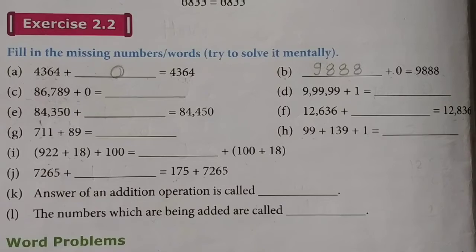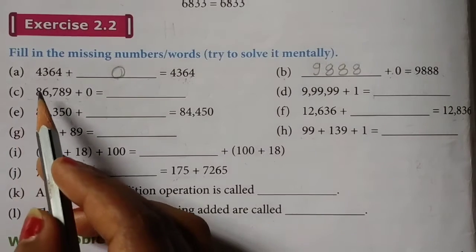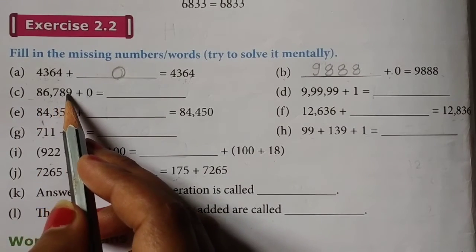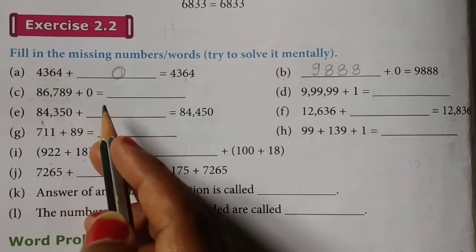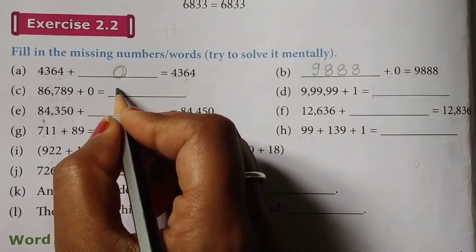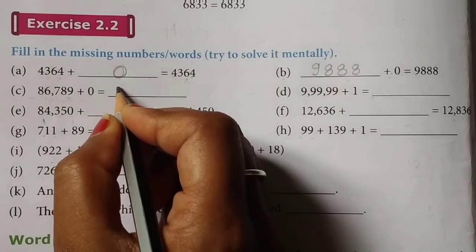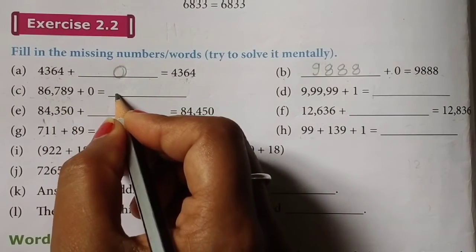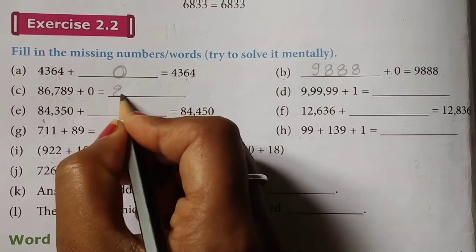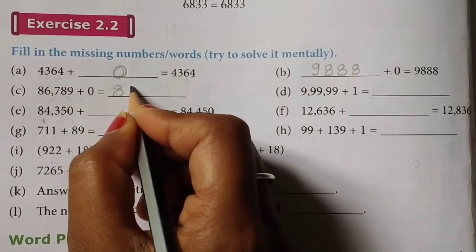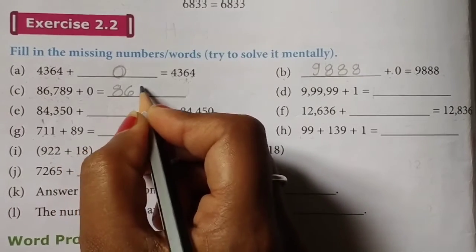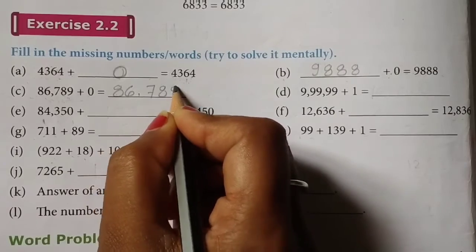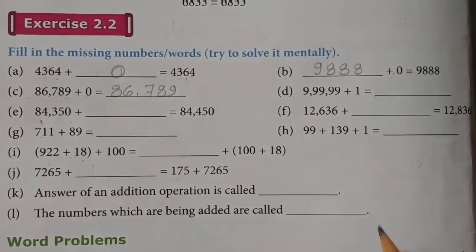Next is number C: 86,789 plus 0. So answer — 0 add करेंगे तो वही number same मिलेगा, उसकी value change नहीं होगी. So write here: 86,789.